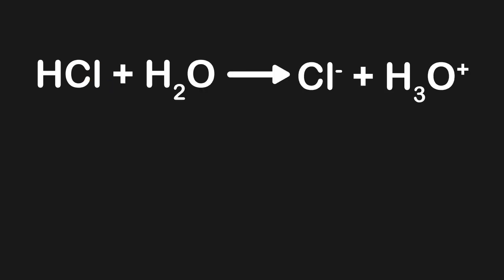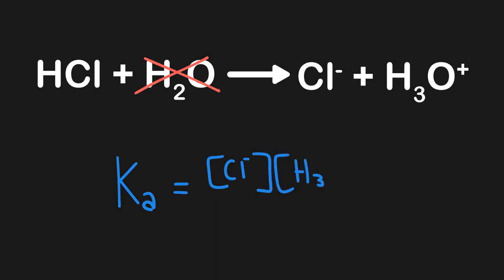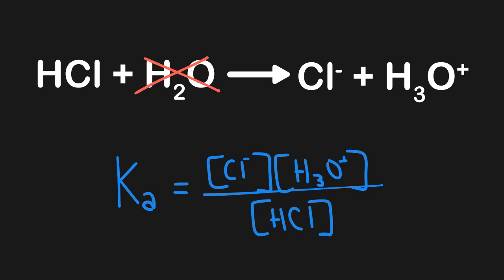Now that we've seen examples with enzymes and solubility, let's look at an example with the equilibrium constant of acid dissociation — Ka for acid-base chemistry. Again, we repeat the exact same process: it's still going to be equal to the concentration of products over reactants, and we will exclude pure liquids. Since this is mostly going to be water, we won't include water in our equilibrium constant. Here we have the concentration of Cl⁻ as one product times the concentration of H₃O⁺, all over the concentration of HCl since that is our reactant.